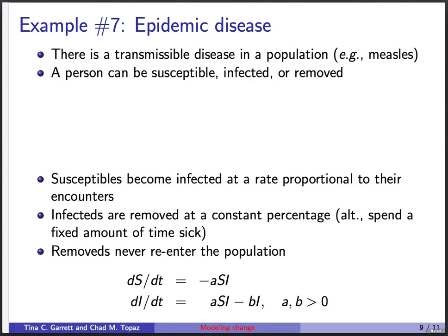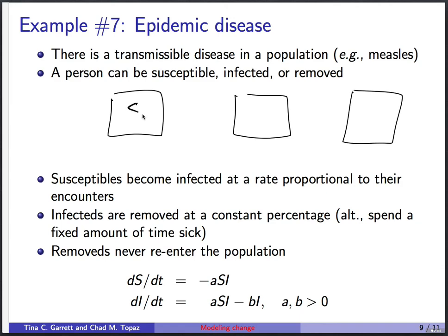Here's another problem about epidemic disease. Imagine a transmissible disease in a population — maybe measles. The population is divided into three classes: susceptible (healthy and can get it), infected (currently sick), and removed (either recovered with immunity or dead). A typical way to visualize this is a flow diagram: susceptible → infected → removed. Susceptibles become infected if they get sick, and infected people flow to removed.